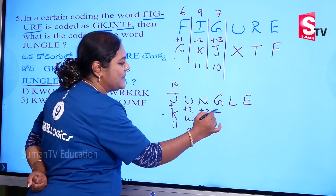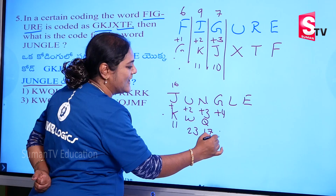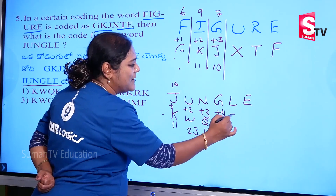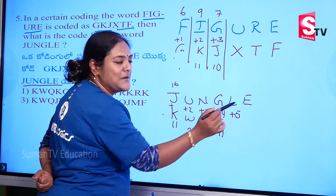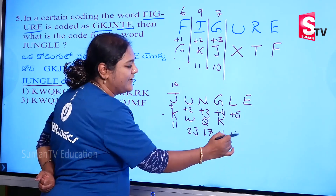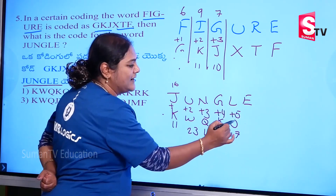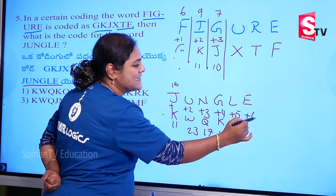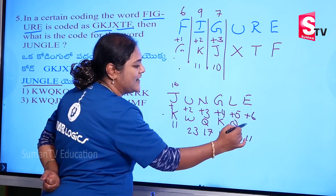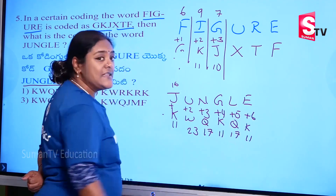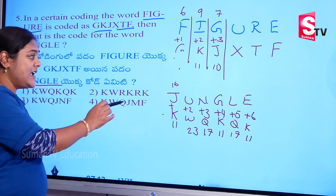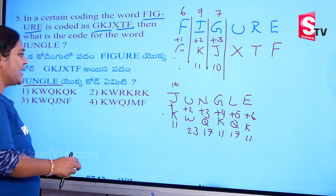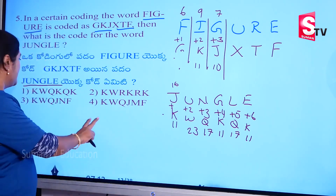Q, plus 4: 7 plus 4 equals 11, giving K. Then plus 5: 12 plus 5 equals 17, giving Q. Then plus 6: 11 plus 6 equals 17, giving K. So the result is K, W, Q, K, Q, K.